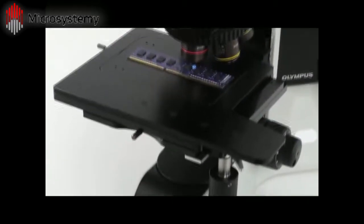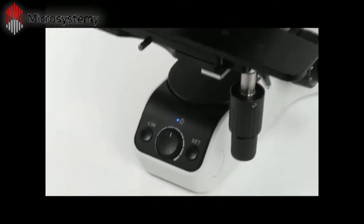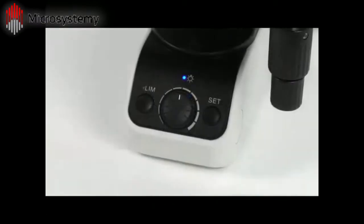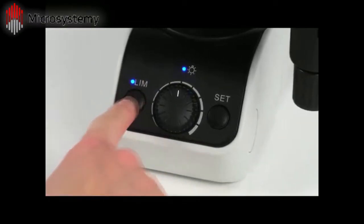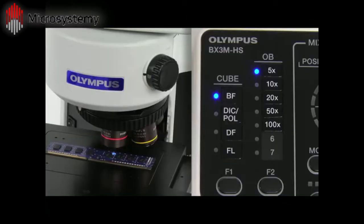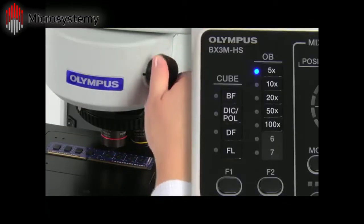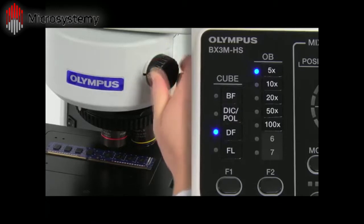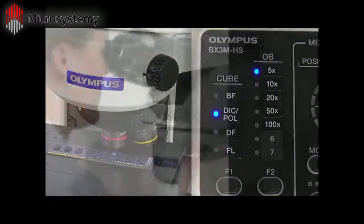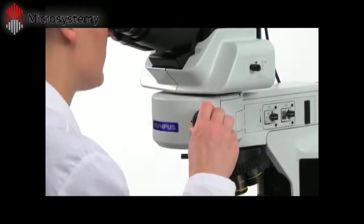For traditional observation methods, setting the illumination intensity with LightManager saves time and minimizes operator training. LightManager works with coded hardware by adjusting the illumination intensity to preset values when the magnification and observation method are changed. This takes the guesswork out of optimizing the lighting.